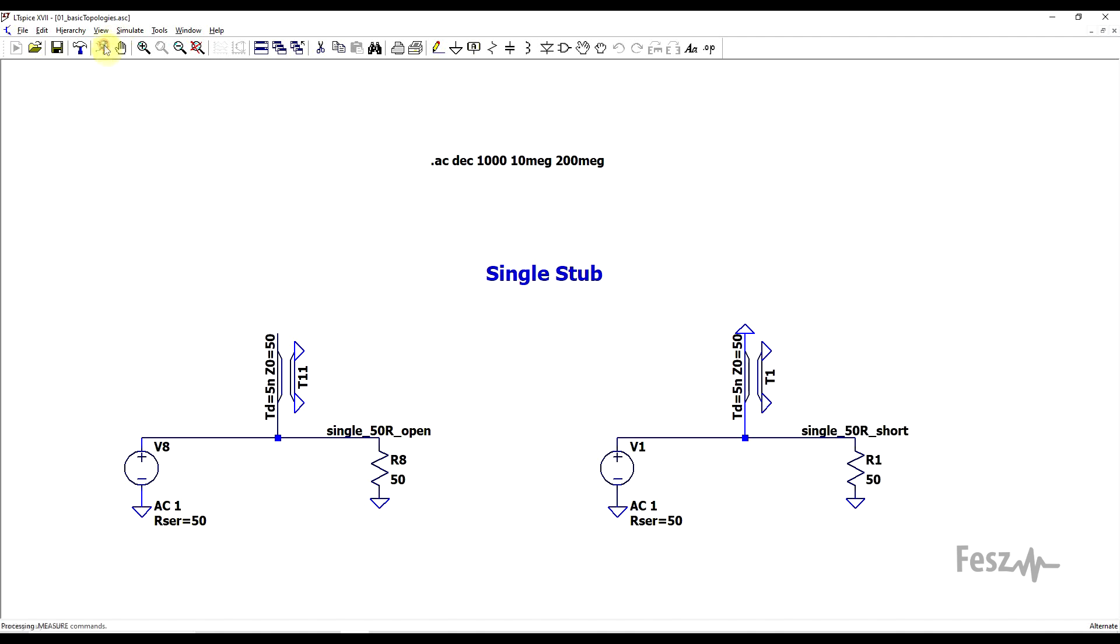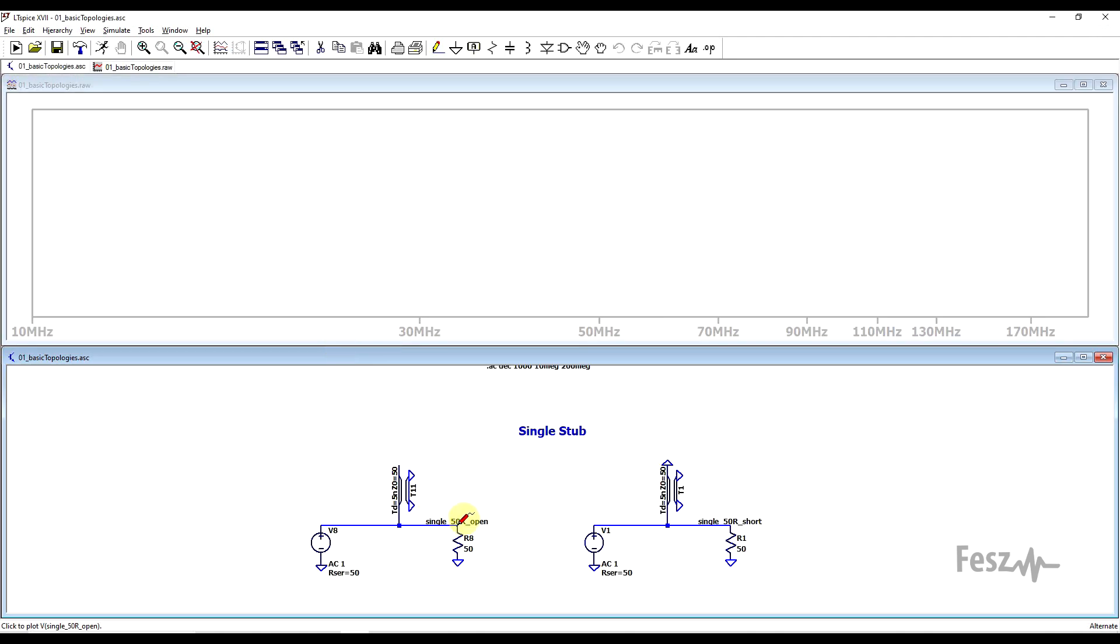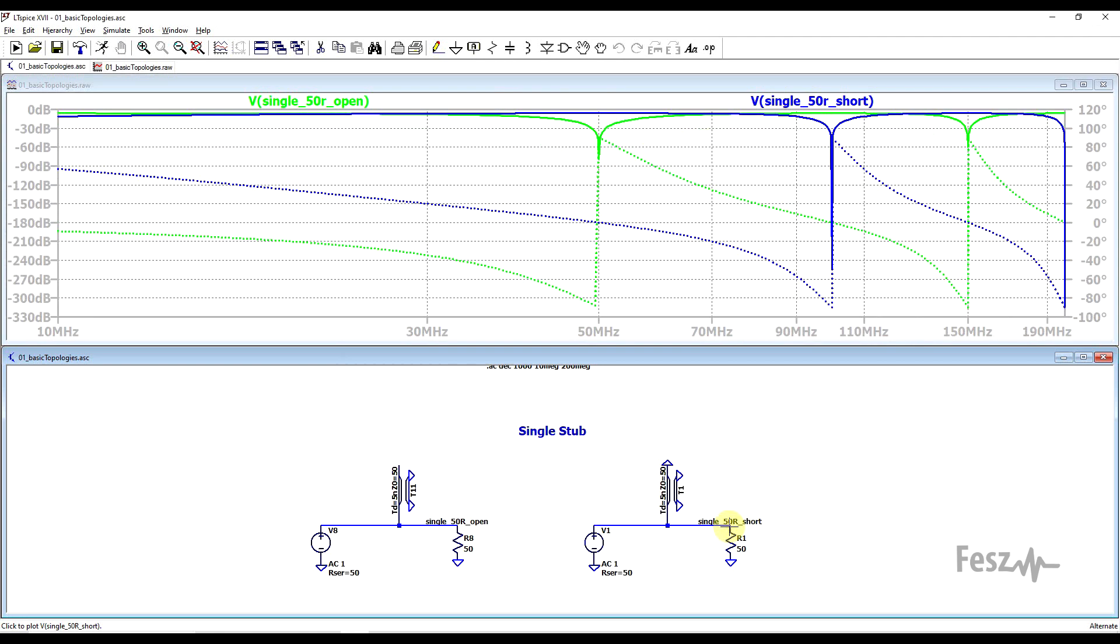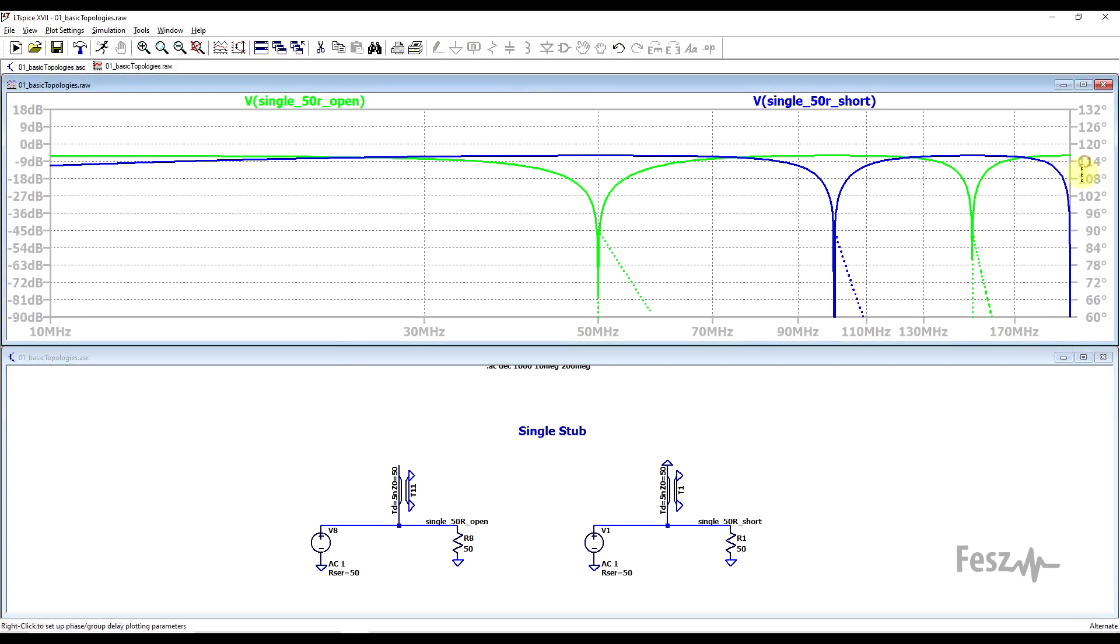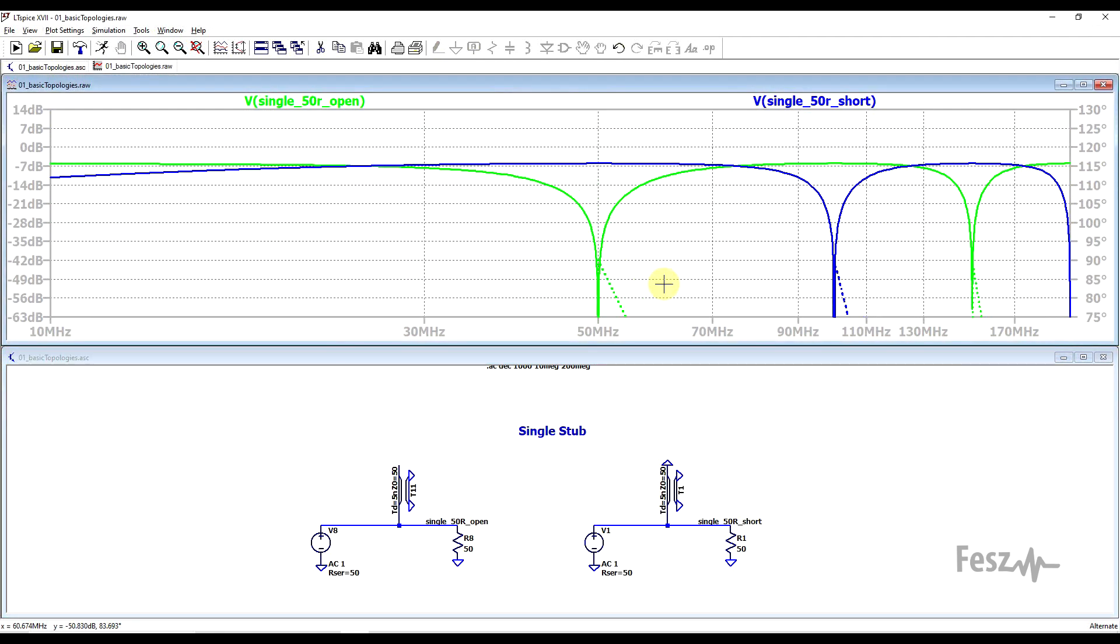And to start things off, I connected the end once as an open circuit and once as a short circuit. So if we simulate this circuit and we look at the two output results, we see the basic behavior of this type of filter. The open circuit filter produces a dip at the quarter wavelength frequency, so at 50 megahertz, whereas the short circuit filter produces a maximum response at the same frequency.